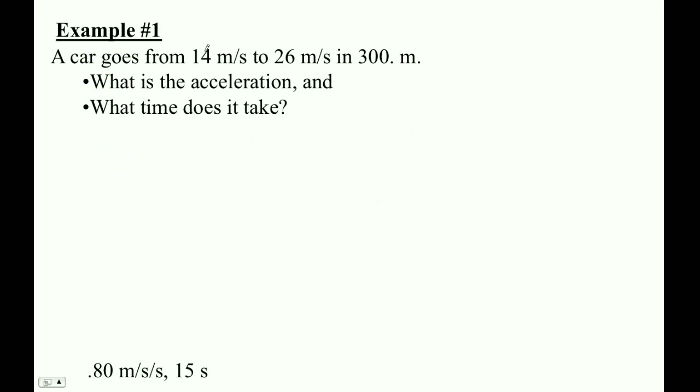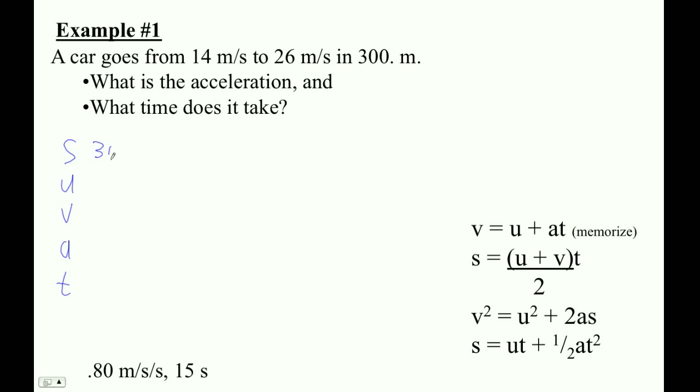So here is a problem. It goes from the speed to the speed in that much distance. What's the acceleration? What time does it take? So the first thing to do is, and here are our formulas, just bring those in there. The first thing I think to do is to write this, write down what you know. So we call these SUVAT problems because that's what it spells. S is 300 meters. Initial velocity must be 14. The final velocity must be 26. And then we don't have acceleration, we don't have time. So the rule is, if you know three of the five, you can figure out the other two.